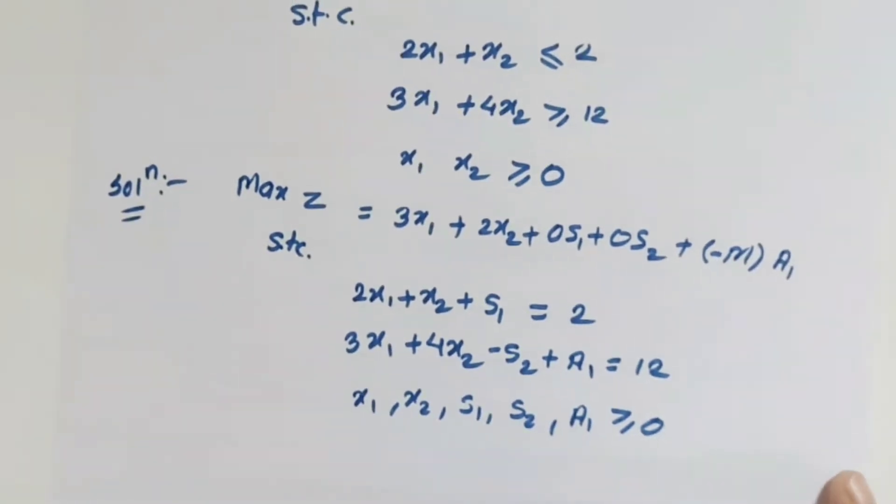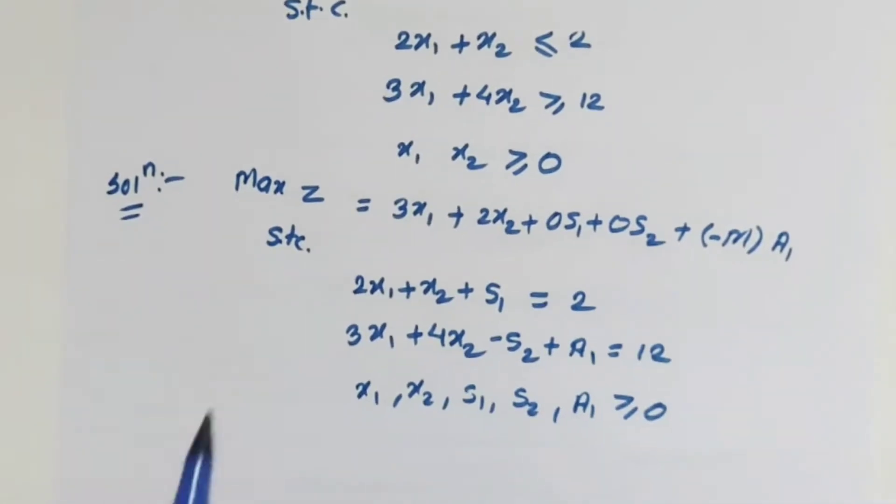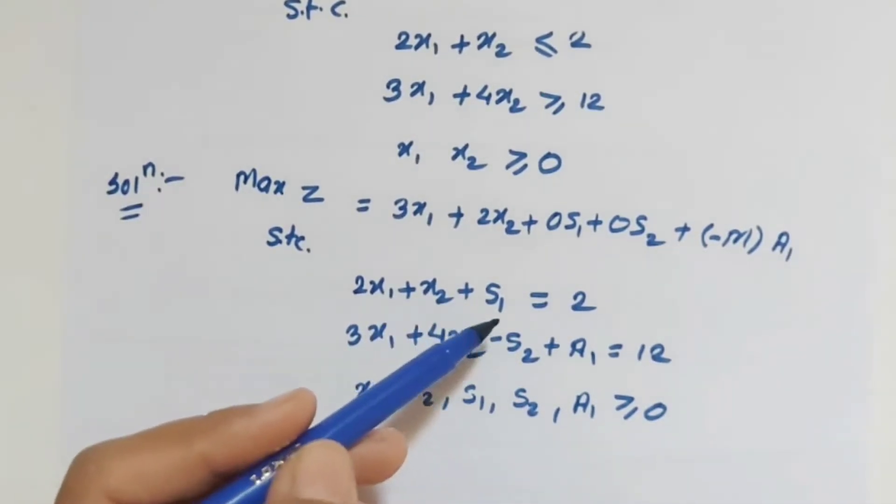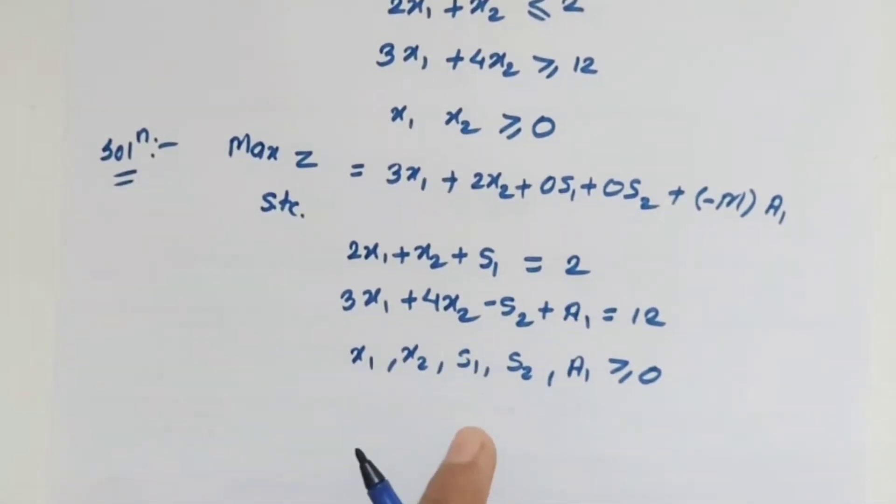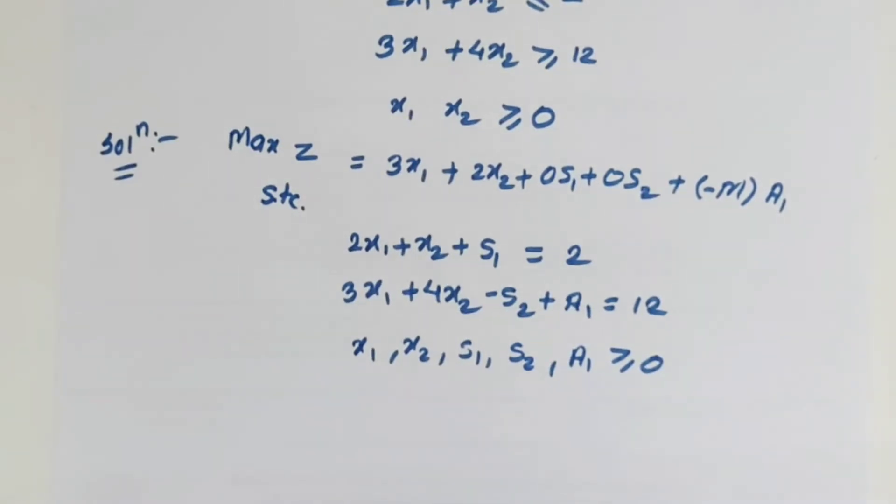If you look at notes, instead of s1, s2, and a1, they are written as x3, x4, and x5. So these are variables. There is no difference in variables. You can write y, x, s, a - these are all our variables. Notes are written in that form, but I want you to understand the difference between slack, surplus, and artificial, so I use this notation. But you can do like the notes - there is no difference. You can write it either way.